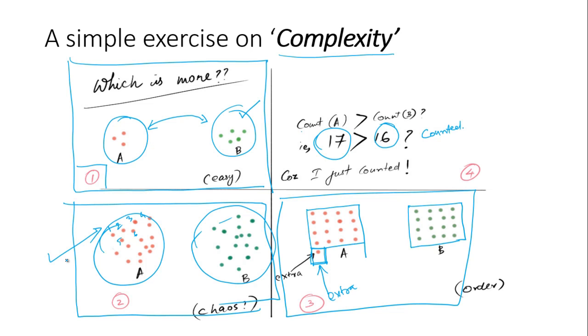The reason is there's no order, no indication of how many dots it contains, unlike case three. Because we have an order, it's easier to tell which group contains more dots. This is a case of chaos, basically, and there's complexity resulting from a greater number of dots.